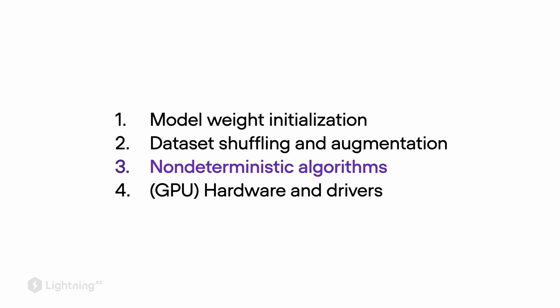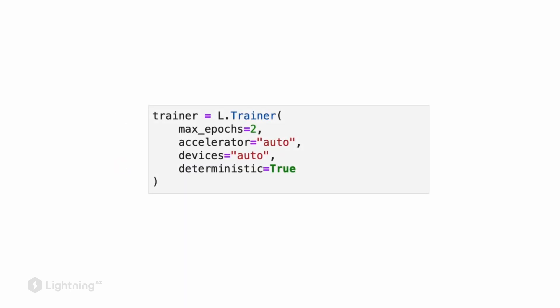So how about non-deterministic algorithms — how can we make them behave in a predictable way? One way to do that is by setting deterministic equals true in the Lightning trainer. That's one of the nice features that the Lightning trainer provides, requiring just one line of code change.